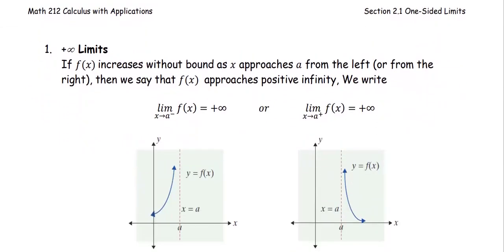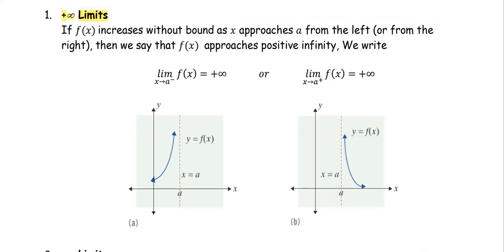The first case: positive infinity limits. If f(x) increases without bound as x approaches a from the left or from the right, then we say that f(x) approaches positive infinity. We can see in a graphical way as x approaches a from the left side, the y approaching positive infinity. That's the direction of the graph going up there as unbounded.